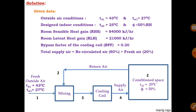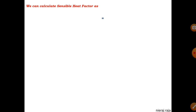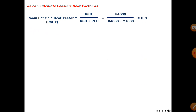Since we have sensible heat gain and latent heat gain, we can easily calculate the RSHF — Room Sensible Heat Factor — using the formula: RSHF = RSH / (RSH + RLH). The sensible heat and latent heat values are directly given in this problem. In some problems, different sources might be given and you'd add them up for sensible and latent heat, but here RSHF calculates to 0.8.